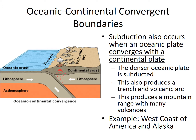Oceanic-continental convergent boundaries: subduction also occurs here. The denser oceanic plate is subducted. This also produces a trench and volcanic arc, but the volcanoes occur under the continental crust. Sometimes it produces mountains rather than volcanoes. An example is the west coast of the United States and Alaska. We have mountains near the west coast and volcanoes such as Mount St. Helens near Seattle, which is an example of an oceanic-continental convergent boundary.